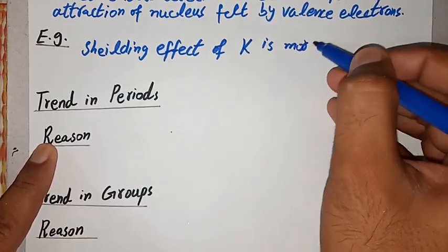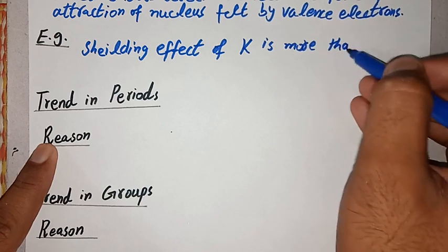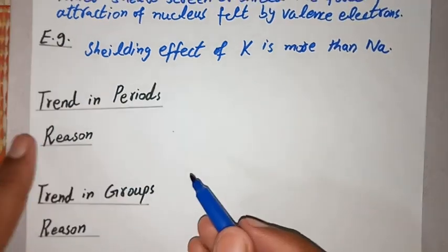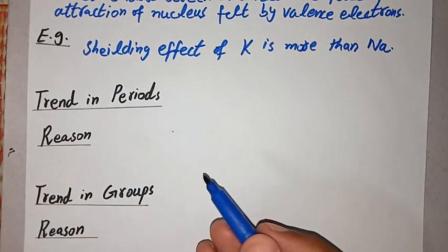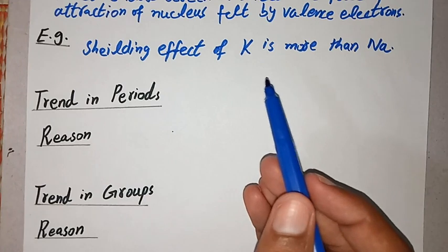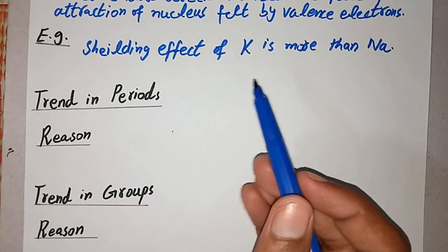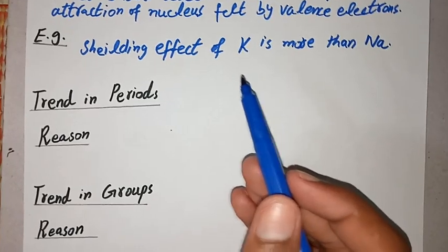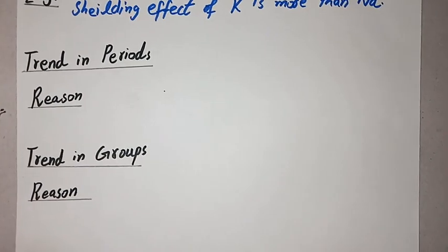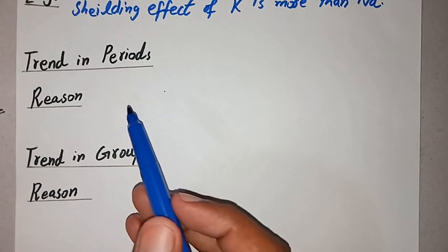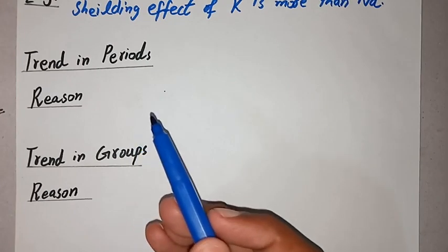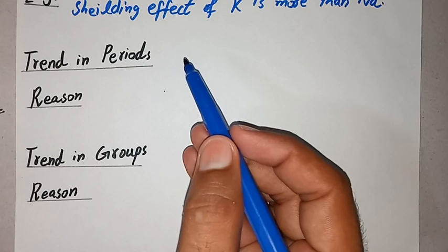As an example, the shielding effect of potassium — represented by K — is more than that of sodium. We will discuss the reason for the greater shielding effect of potassium when we look at the trends. Now we will discuss the trends of shielding effect in a period and in a group.